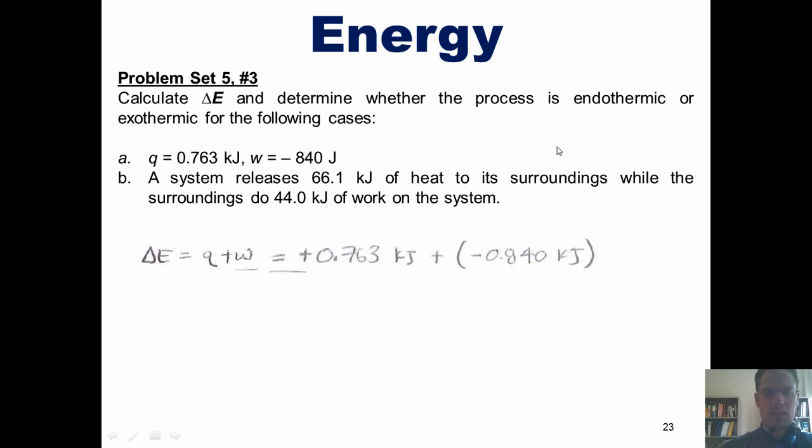The value of heat is 0.763 kilojoules, and the value of work is negative 0.840 kilojoules. Note that I've converted the original value for work we were given, negative 840 joules, into kilojoules so that my units match for both heat and work as I add them together. I throw this into my calculator and discover that the overall delta E for this process is negative 0.077 kilojoules.